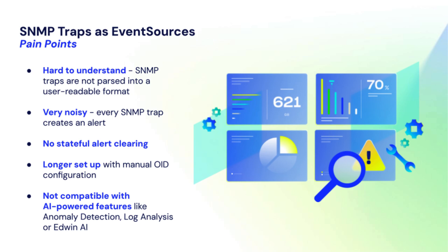With event sources, if you're using them for traps, you would not get any MIB parsing. The traps come in, you've got a cryptic OID number. You can't really figure out what it is unless you've memorized OIDs — which I hope you haven't — or unless you look it up. Additionally, with event sources, every trap resulted in an alert. So you couldn't have an informational trap that just came in and hung out for possible use in an audit use case later.